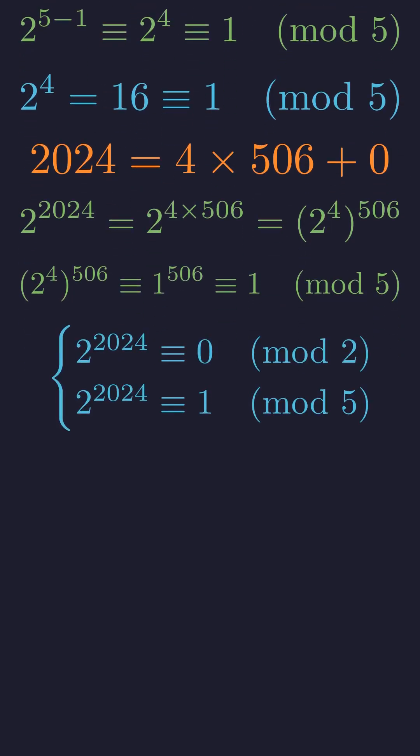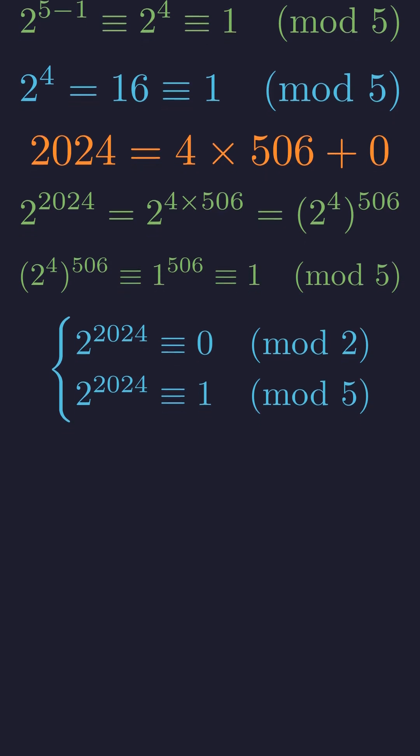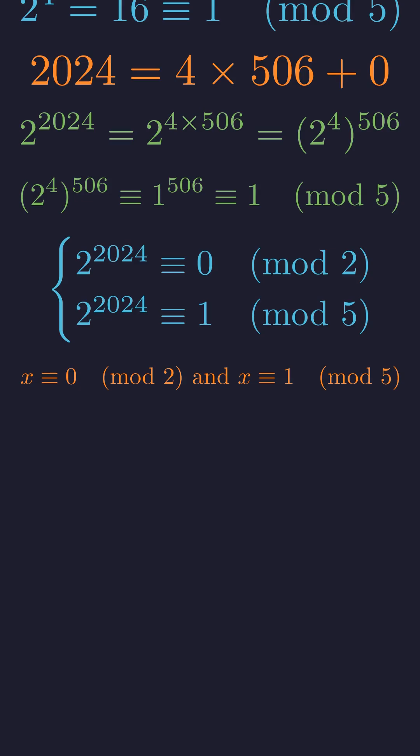So we've established that our number is 0 modulo 2 and 1 modulo 5. Now we need to find what single digit satisfies both conditions. We're looking for a digit that's even, but when divided by 5, leaves remainder 1. Let's think through the possibilities.